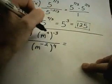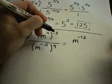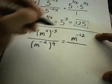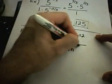Well, I'm going to get rid of the parentheses on top. And remember if they're in parentheses, you multiply. So, I'll get m to the negative 12th power, 4 times negative 3 being negative 12. On the bottom, I'm going to get m to the negative 8th power.